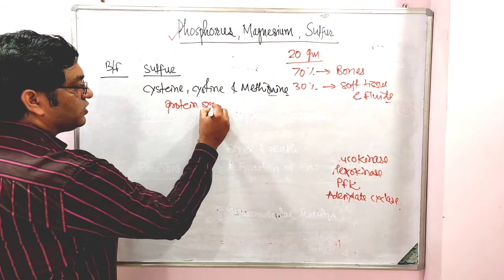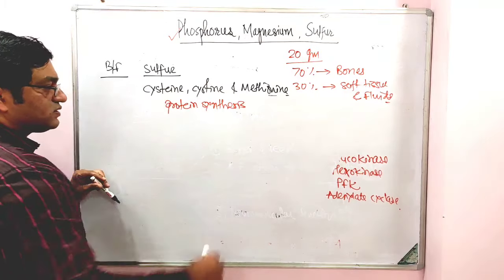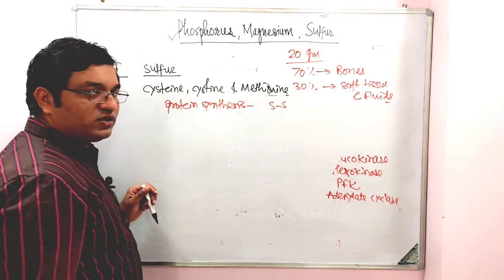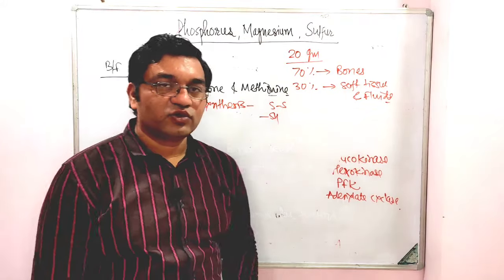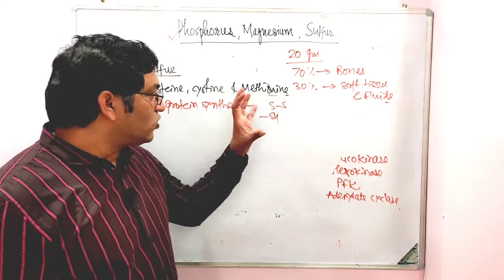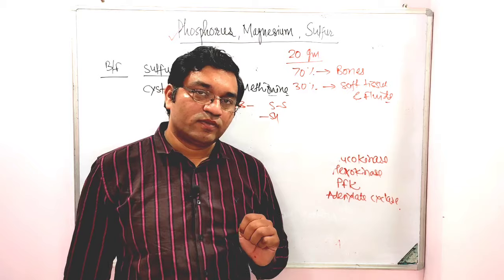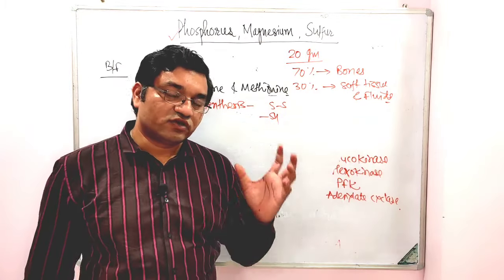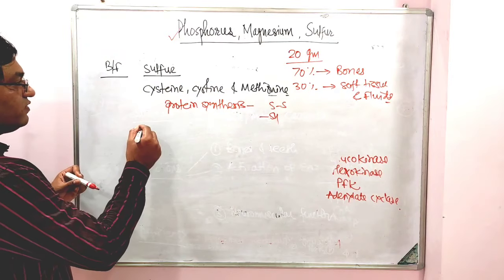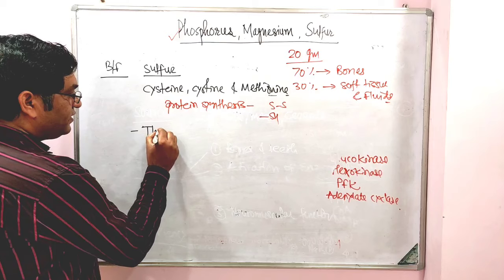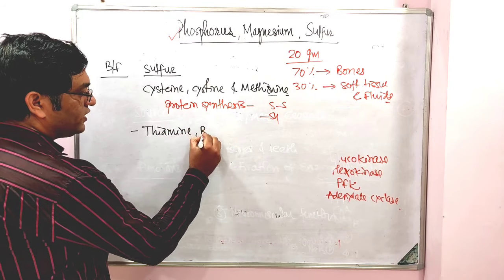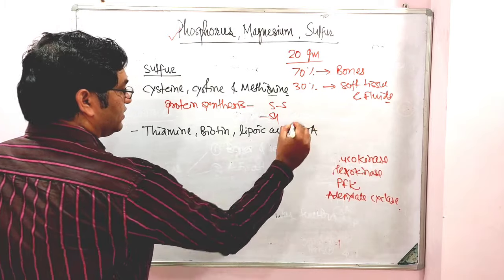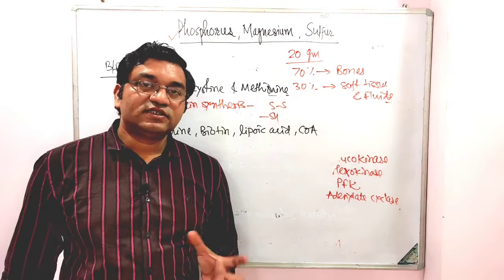Sulphur is present in some vitamins which contain sulfur — these include thiamine, biotin, lipoic acid, and coenzyme A. There are also some compounds which contain sulfur, for example glutathione, and some glycosaminoglycans such as chondroitin sulfate and heparin, and some bile acids for example taurocholate.